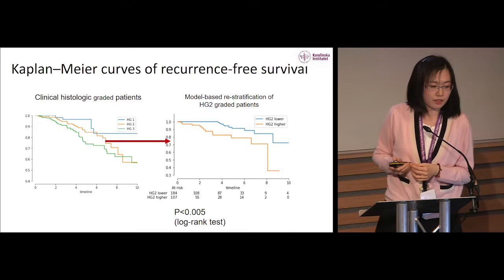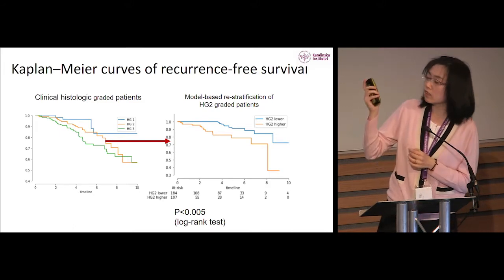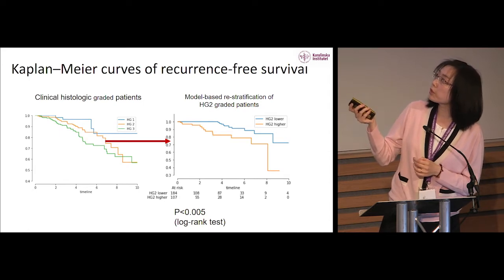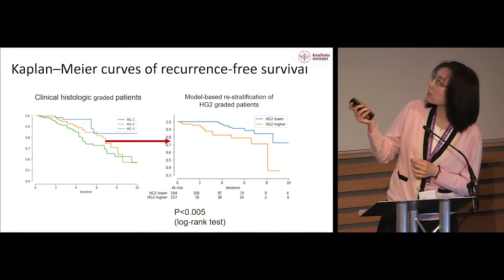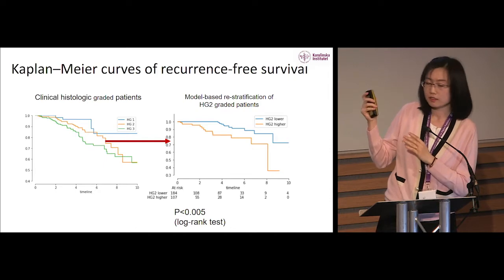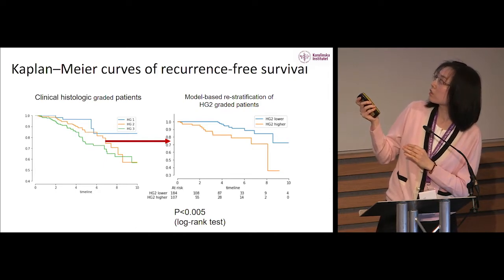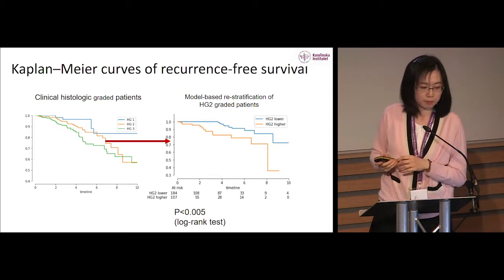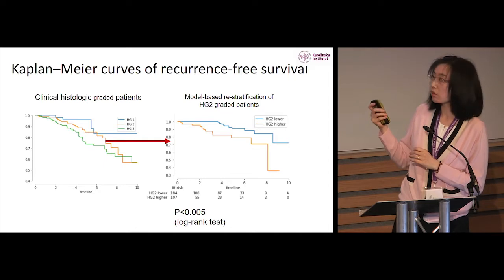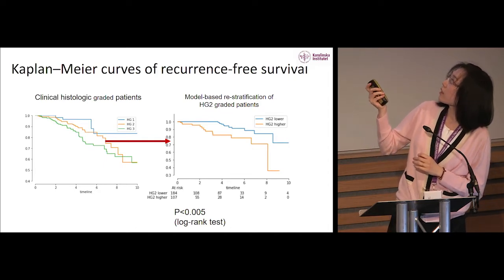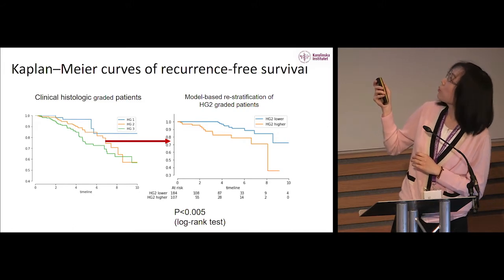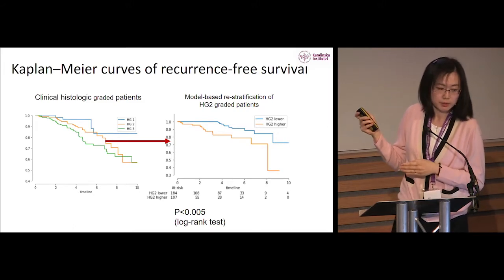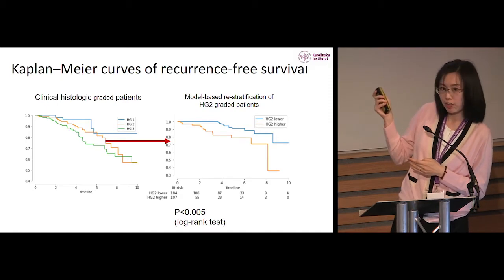The Kaplan-Meier curve on the left shows recurrence-free survival using the original histological grade. The orange line, grade 2, indeed has an intermediate survival rate, with larger variance — the line crosses grade 1 and grade 3 at some time points. After applying the model to this subgroup, the Kaplan-Meier curve on the right shows a significant difference in recurrence-free survival between the two newly re-stratified groups.